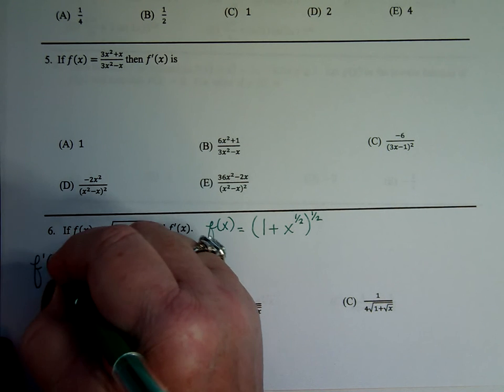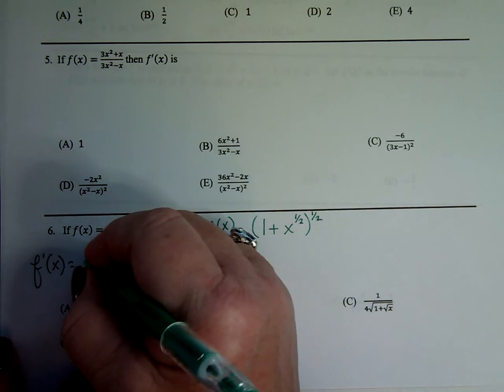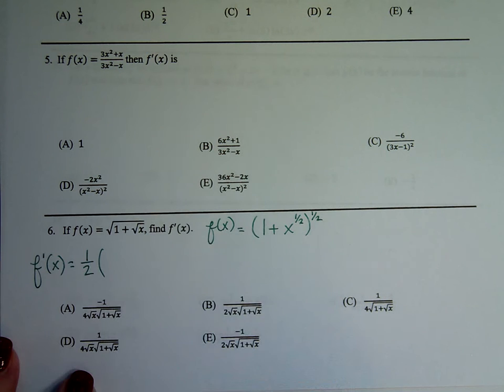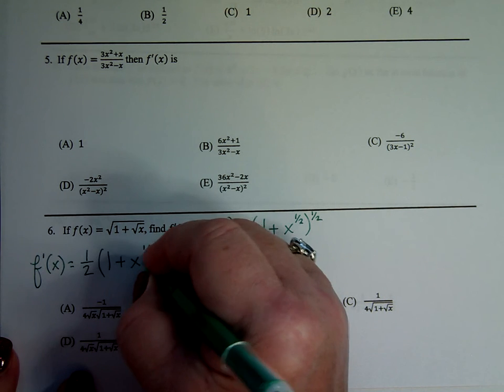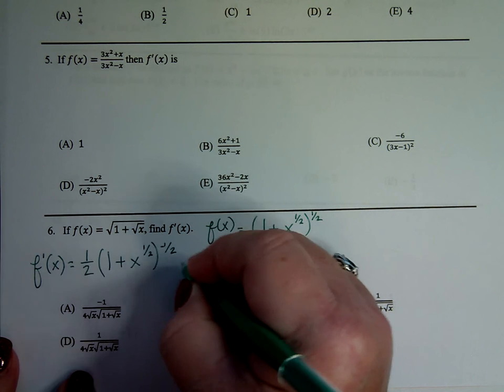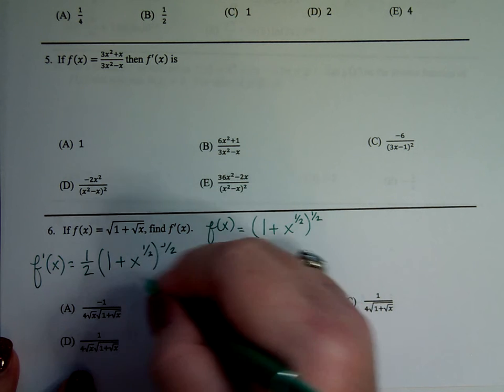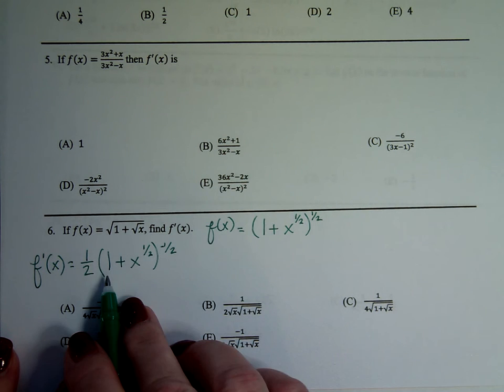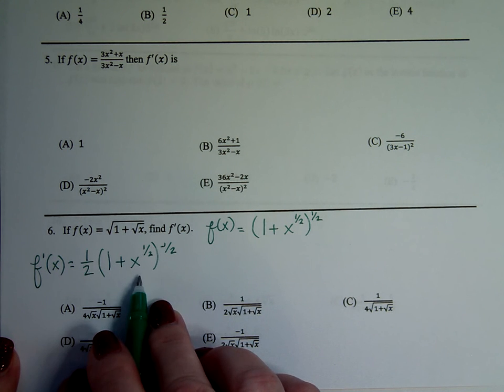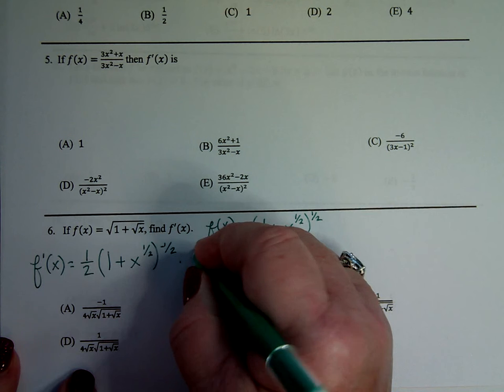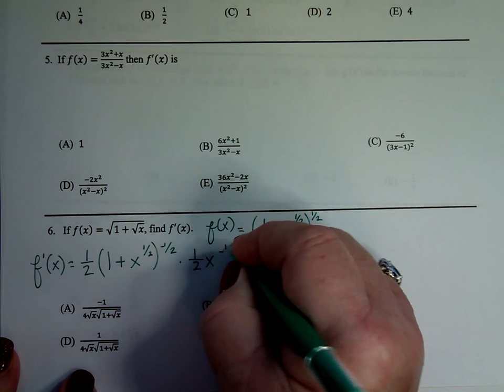So you got to rewrite it in a power form so that you can then take the derivative using your power rules. This one's going to chain rule on you too, but the predominant thing is your power rules. So f prime of x, the power comes down in front. My group goes to 1 less power times the derivative of what's inside. Well, the derivative of 1 is 0, so it's the derivative of x to the 1 half. So it's going to be times 1 half x to the negative 1 half.